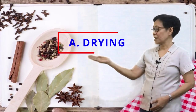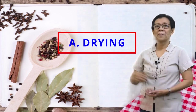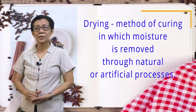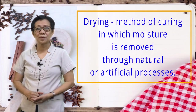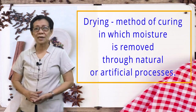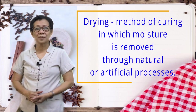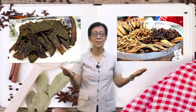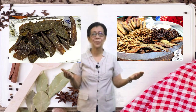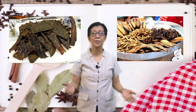Here are some methods of food processing. Letter A: Drying. This is a method of curing in which moisture is removed through natural or artificial processes. Here are examples of food or products produced through drying.